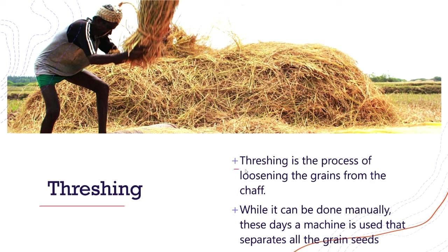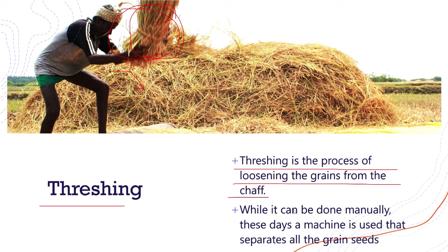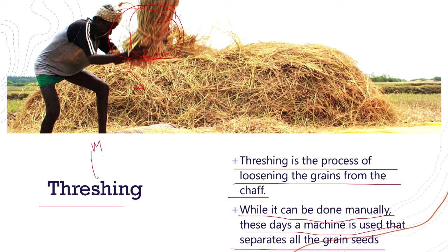Threshing is the process of loosening the grains from the chaff. The farmer beats the harvested crop bundle to separate the grains from the chaff, which is the unwanted substance. The grains are what actually matter for us. Threshing can be done manually, but these days machines are also used to separate the grain seeds from the chaff.